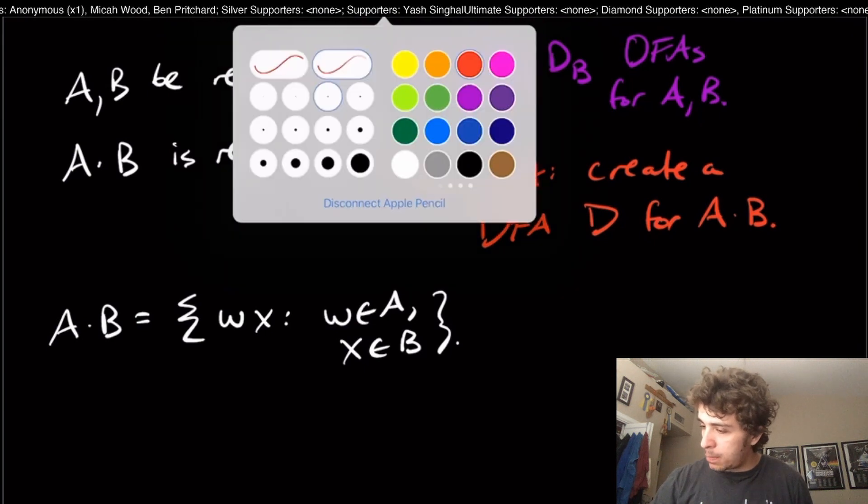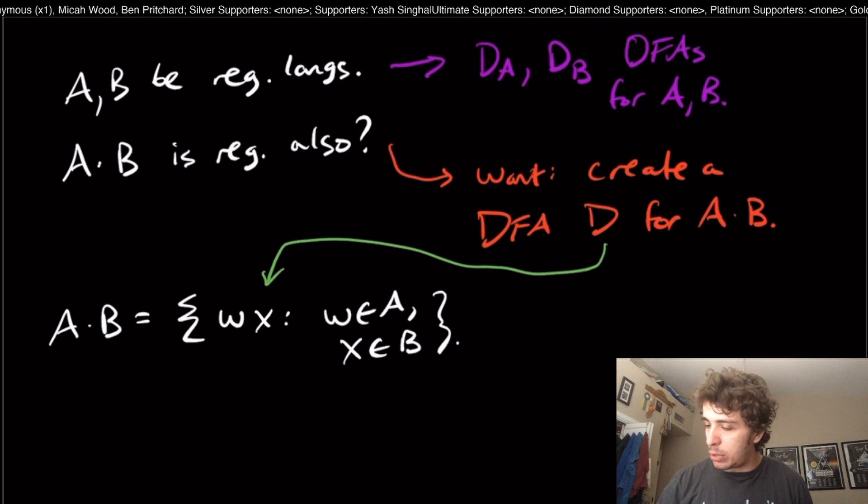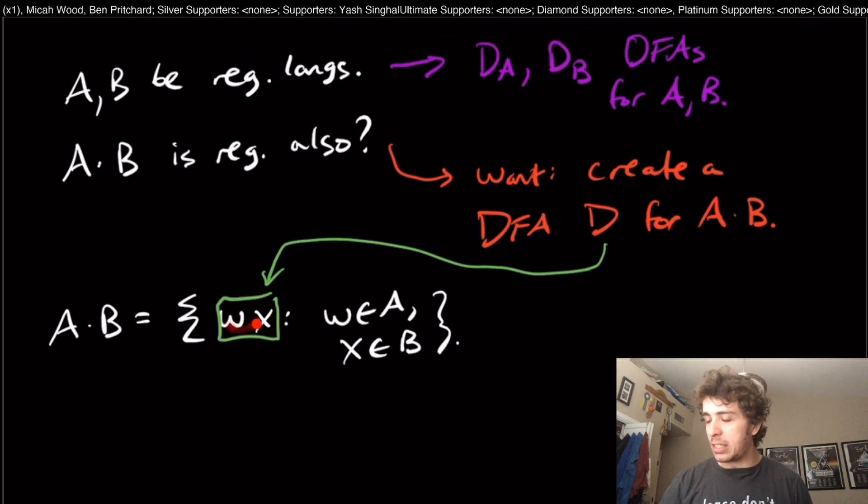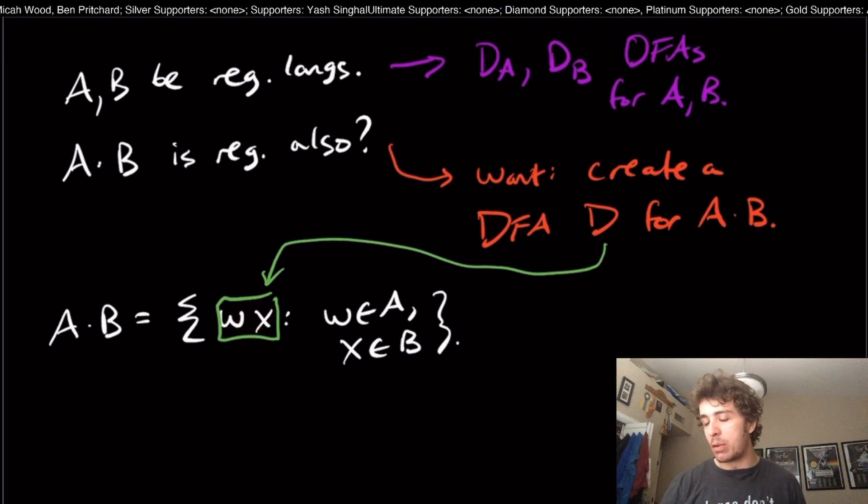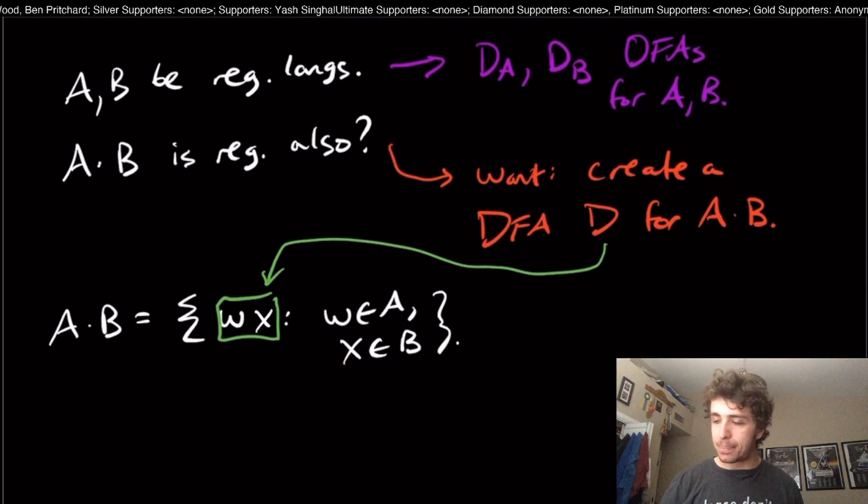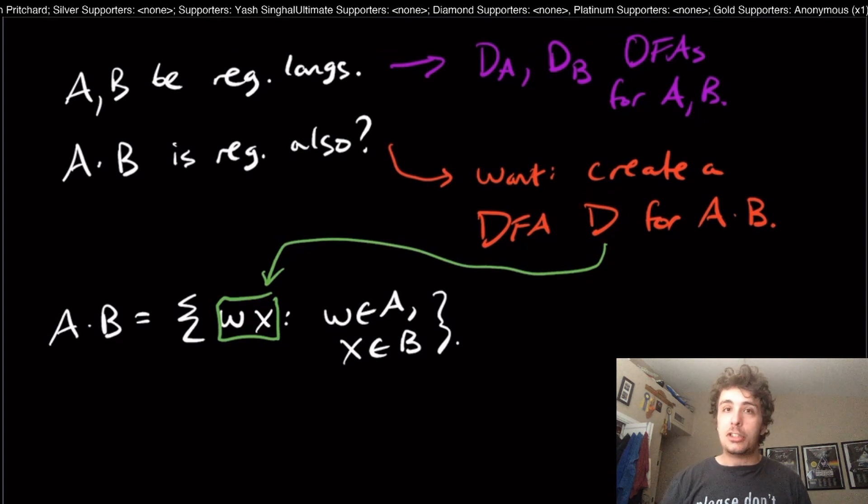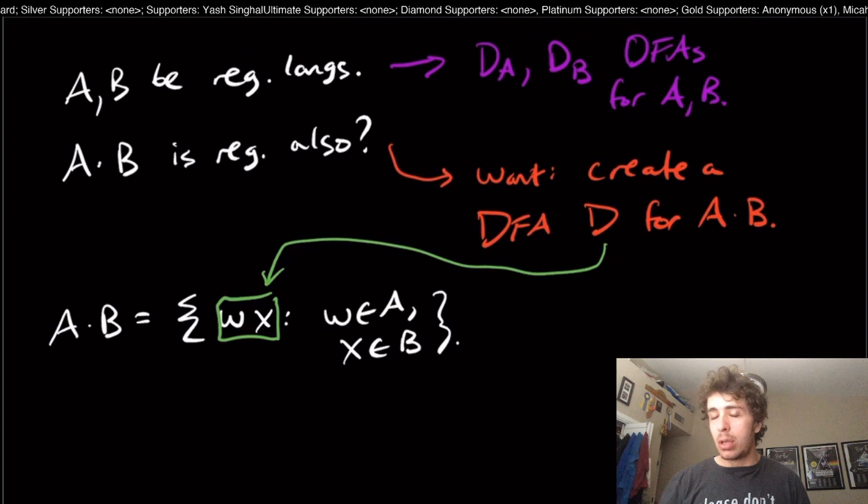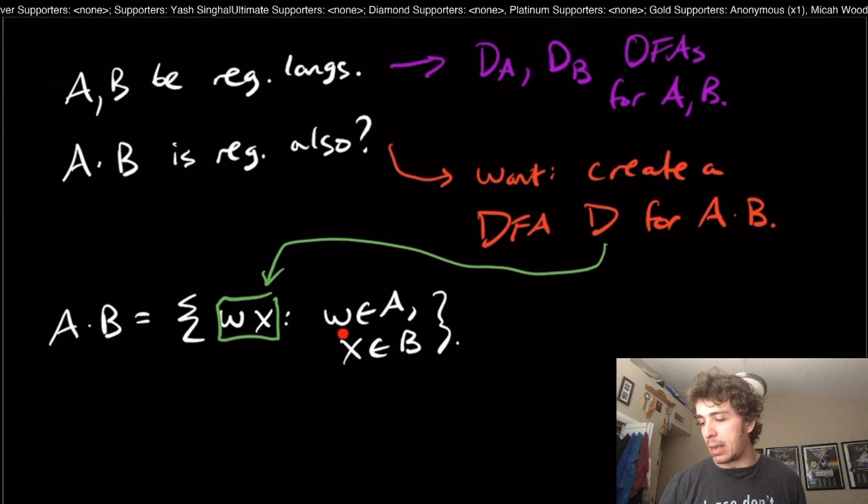If you recall, A concatenated with B is the set of all strings wx such that w is in A and x is in B. The thing to realize here is that the DFA D is going to receive a string like this: it's going to get a string wx, or some string that might be of the form wx.